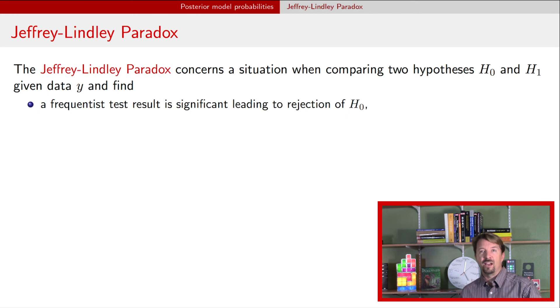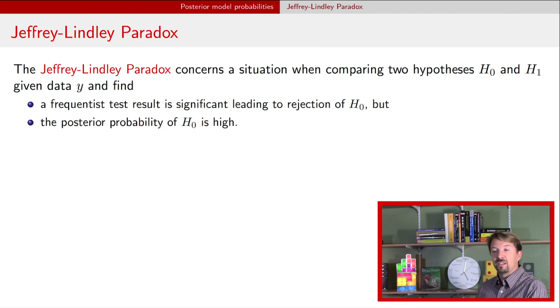You have a frequentist test result, usually via p-values, that leads to a rejection of that null hypothesis. But at the same time, you have a Bayesian posterior model probability that says that that null hypothesis is true. So this apparent paradox occurs in a very specific set of circumstances, and it's good to be aware of those circumstances.